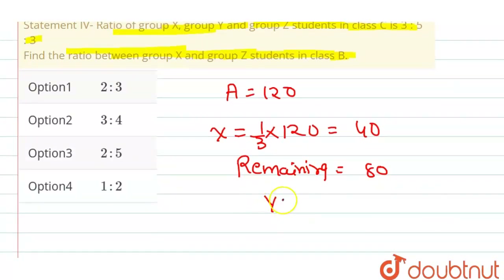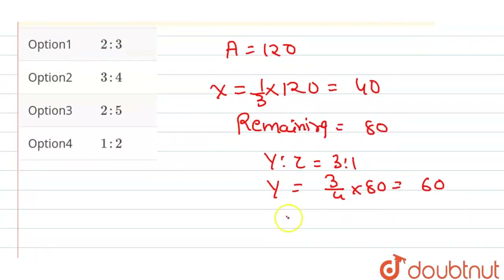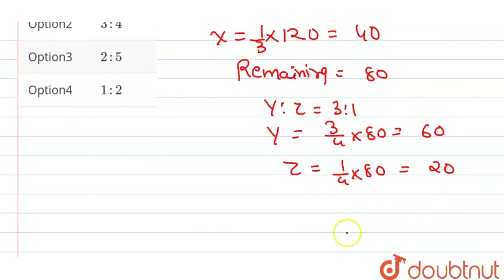तो यह हमारे 3:1 के ratio में Y is to Z के। So Y is to Z का ratio कितना given है? 3:1। So Y में कितने हो जाएंगे हमारे — 3 divided by 4 into 80, that is 60 के equal। And Z में हो जाएंगे हमारे 1 divided by 4 into 80, that is 20 के equal।